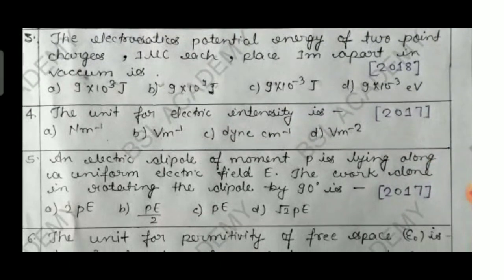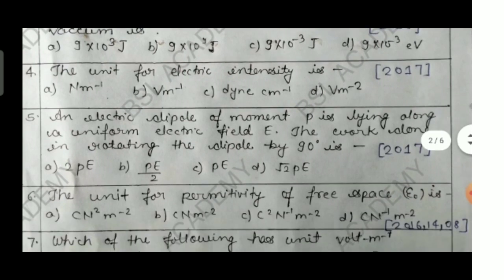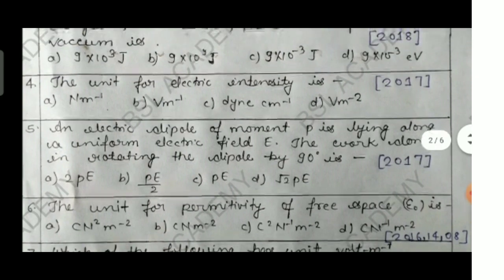Question number four: the unit for electric field intensity is — option A: Newton per meter, option B: volt per meter, option C: dyne per centimeter, option D: volt per meter square. This was asked in 2017. Please answer this question.